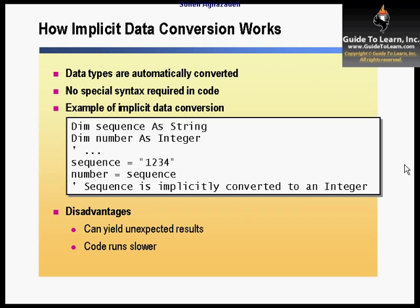So how implicit data conversion works: data types are automatically being converted with no special syntax required in the code. For example, a sequence declared as a string value with the value set to 1234 — the number automatically gets implicitly converted, so 1234 becomes 1234 as a string. This is implicit conversion that VB.NET provides for you. The disadvantage is you can yield unexpected results and code could run slower, because the conversion has to take effect at runtime.